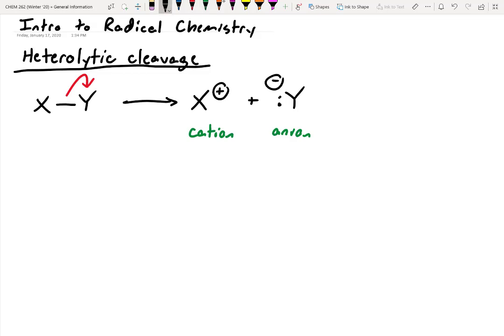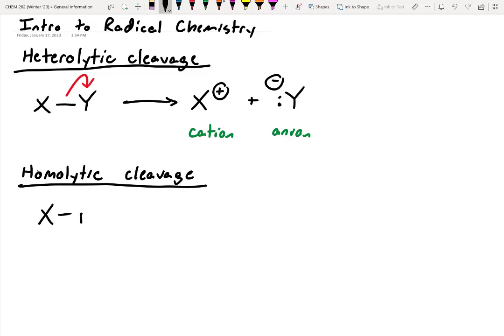Let's compare this to homolytic cleavage. We've got X and Y again, but in homolytic cleavage, Y doesn't get all the electrons. Instead, the covalent bond pair will be split evenly — Y will get one electron, and X will get the other.